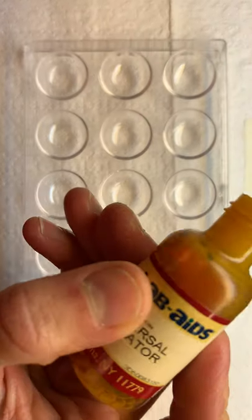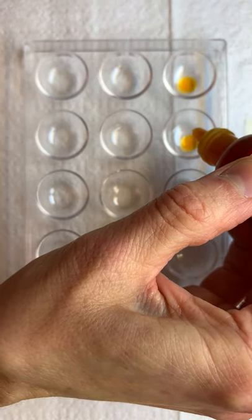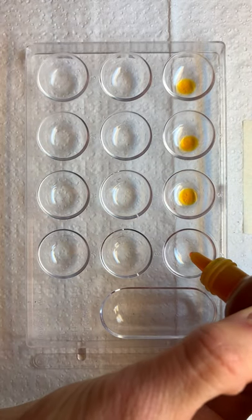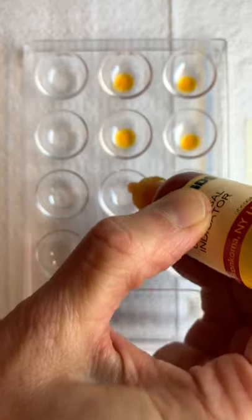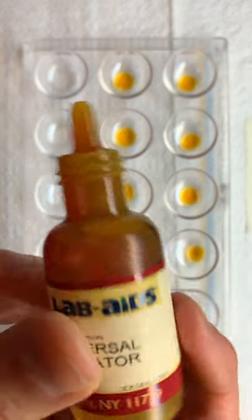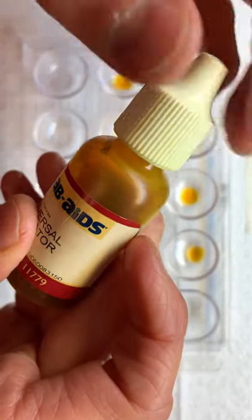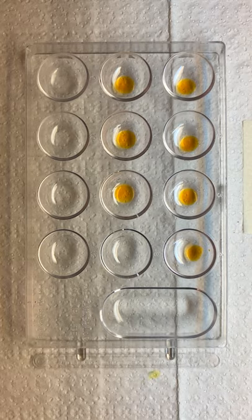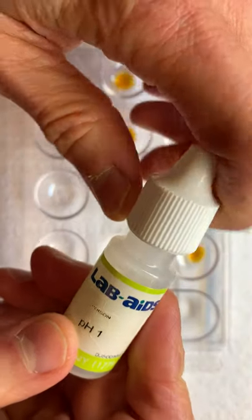We're going to take one drop of the universal indicator in all seven wells, and the word universal should give you a hint that this means it will go from 0 to 14. Universal indicator. And now we're going to do what we did before, which is to add each pH to the well. So pH 1.